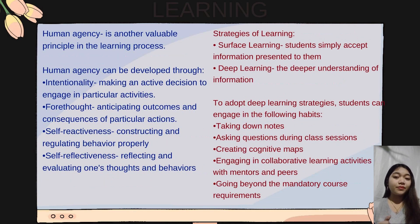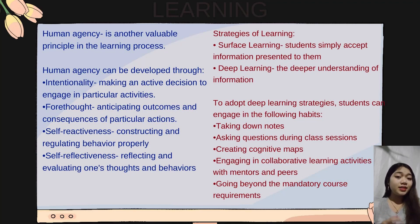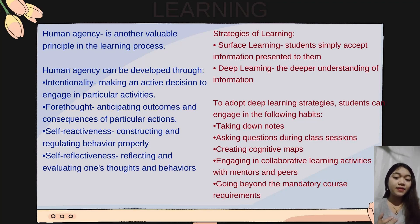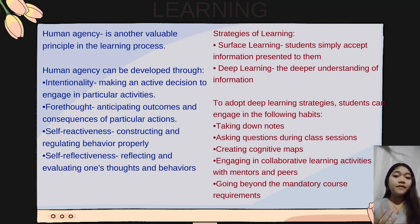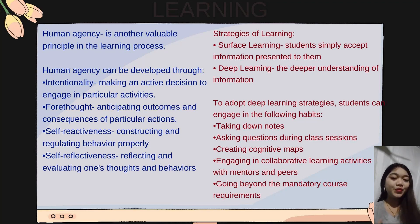Human agency is another valuable principle in the learning process. Human agency can be developed through: first, intentionality — making an active decision to engage in particular activities; second, forethought — anticipating outcomes and consequences of particular actions; third, self-reactiveness — constructing and regulating behavior appropriately; and fourth, self-reflectiveness — reflecting and evaluating one's thoughts and behavior. There are two strategies in learning that students can use.